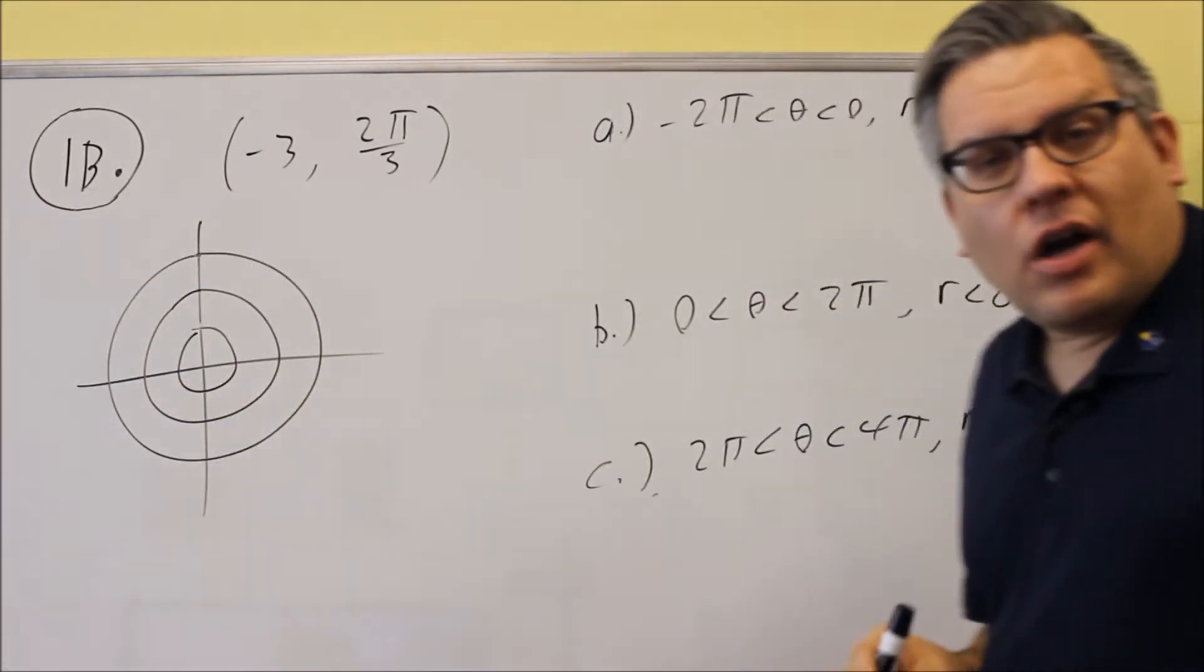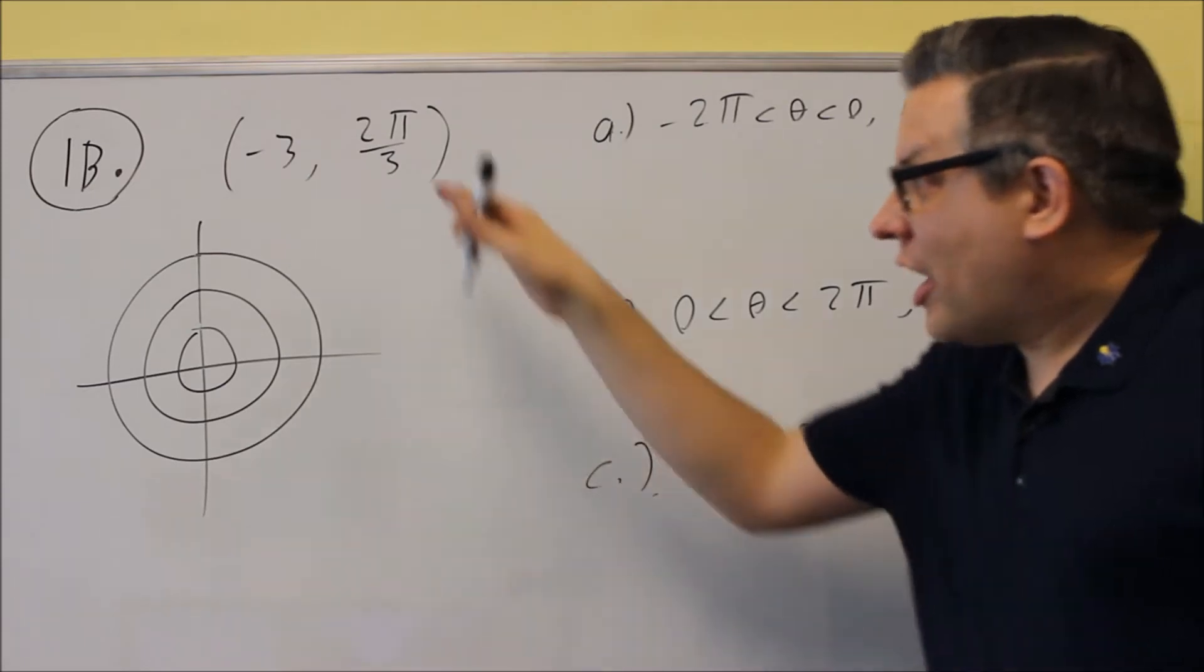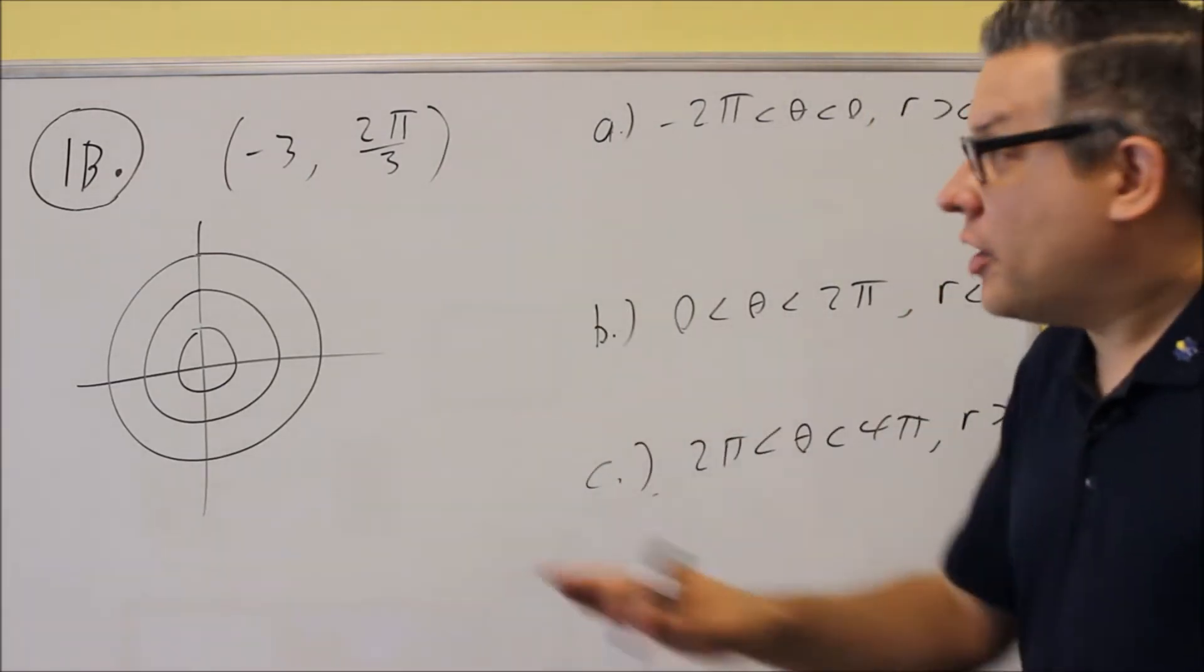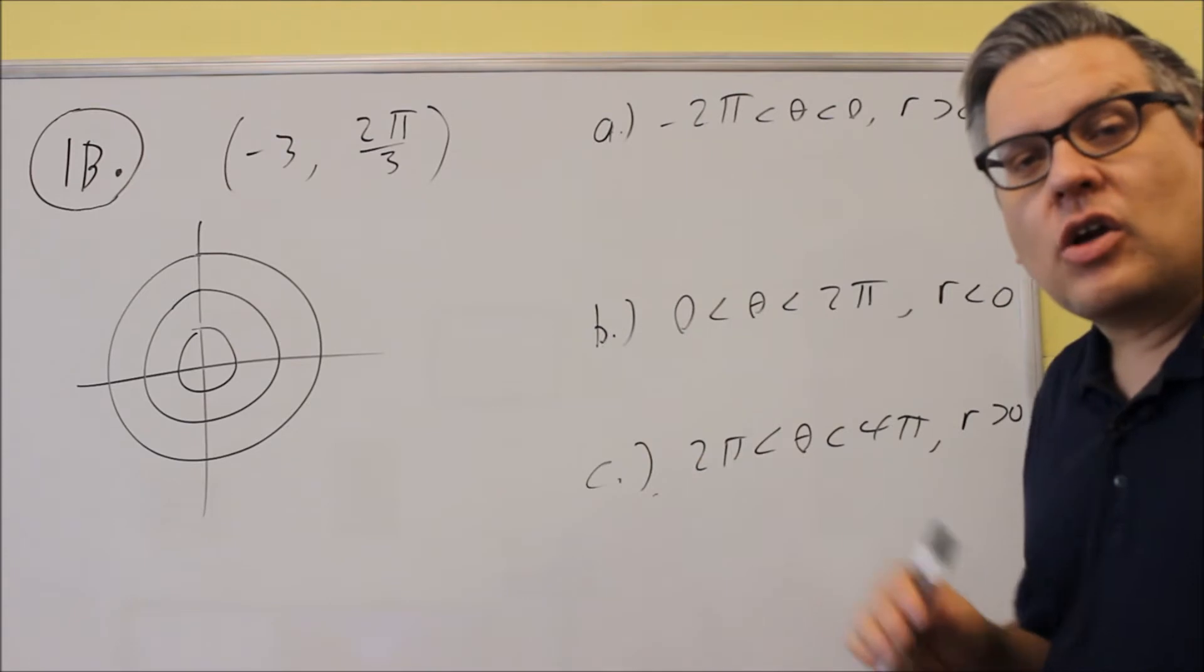And also your polar grid that you have also has radians. So you'll either be given one grid or the other depending on whether they give you a radian or a degree.